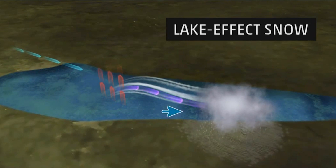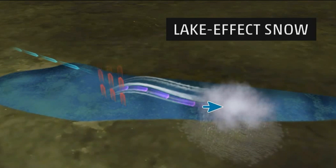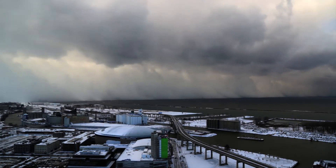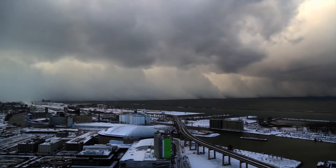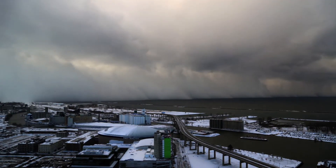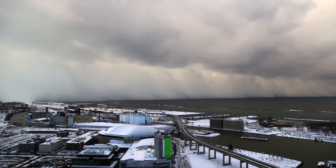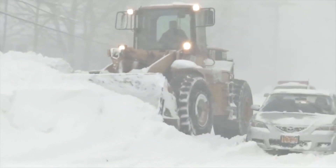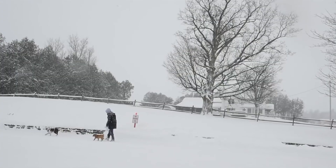Why can lake effect snow be so hard to predict? Wind speed and direction often dictates where and how much snow may fall. If the wind changes directions, slows, or speeds up, it can drastically change how much snow one area will get. Since the bands are often so narrow, some locations can be hit hard by lake effect snow, while others nearby receive only a dusting.